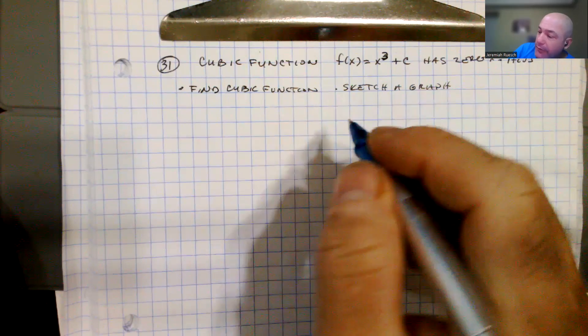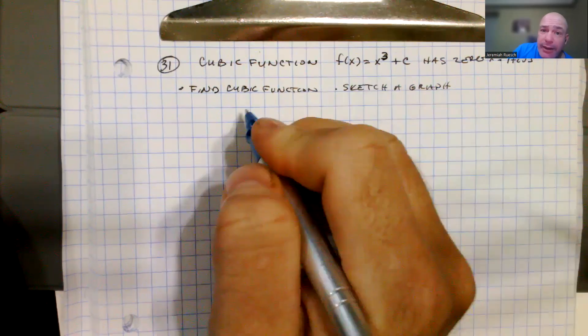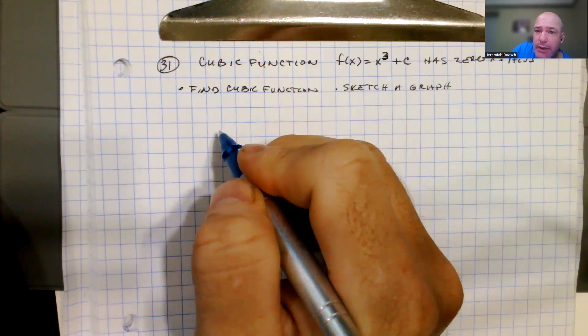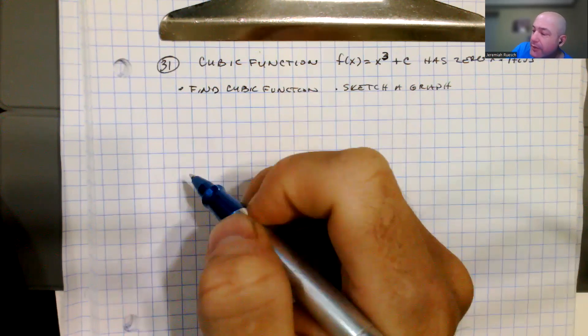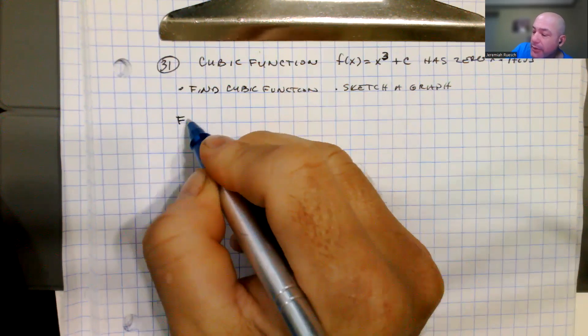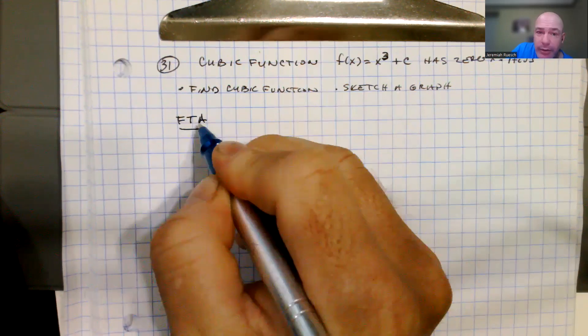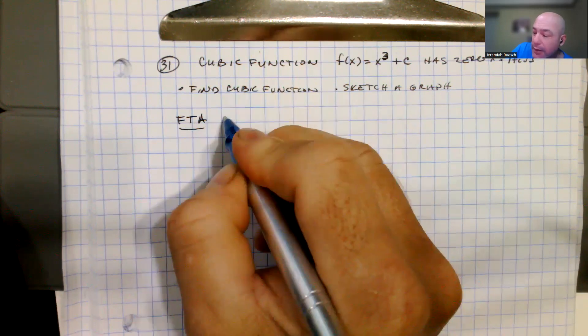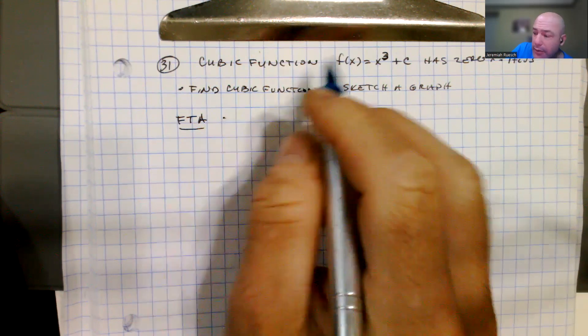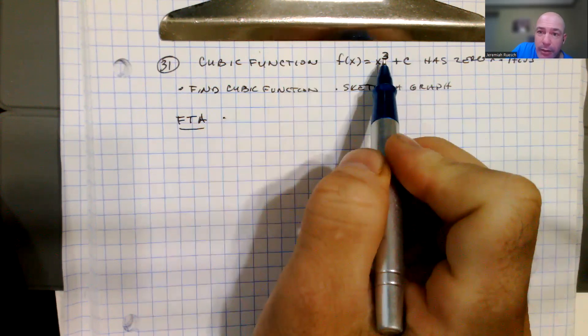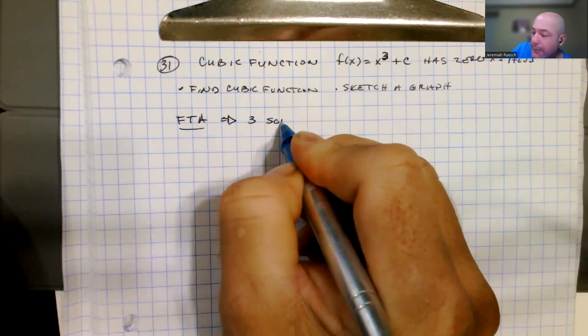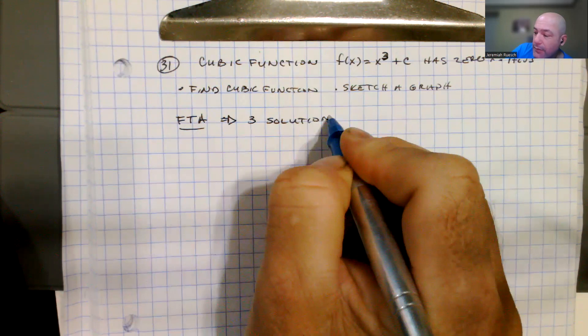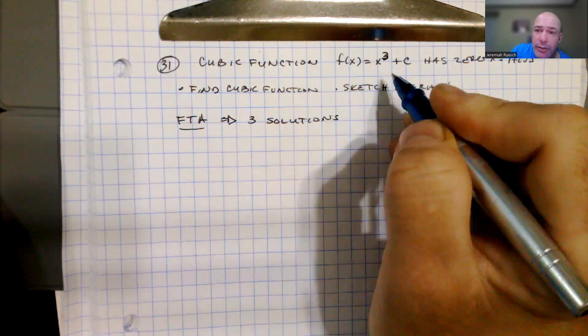There are a couple of things happening here behind the scenes that we need to make connections to in order to solve this problem successfully. The first one is that the fundamental theorem of algebra says that every polynomial has as many roots as the leading degree. So FTA guarantees that we have three solutions to this polynomial. In other words, there are three roots.